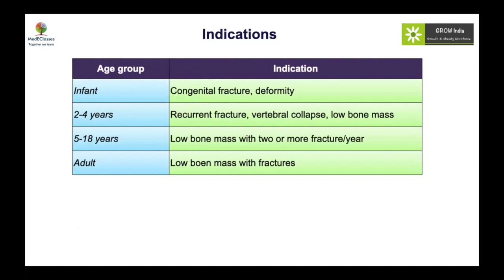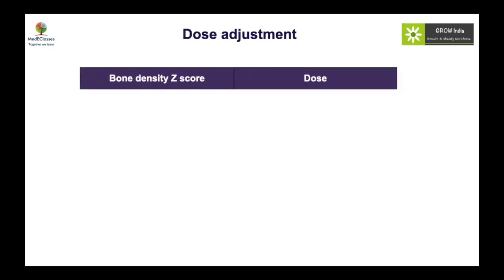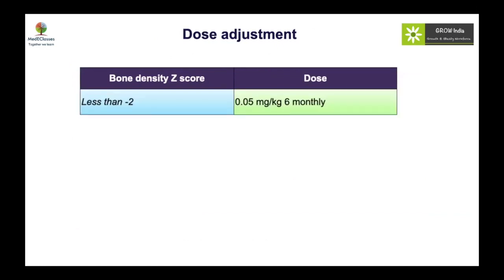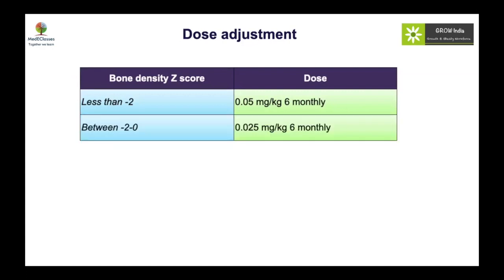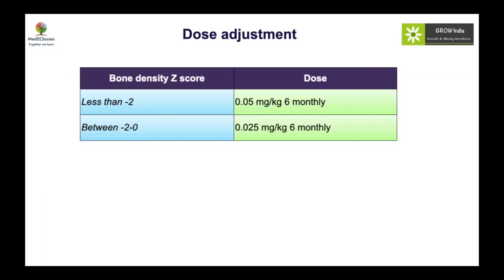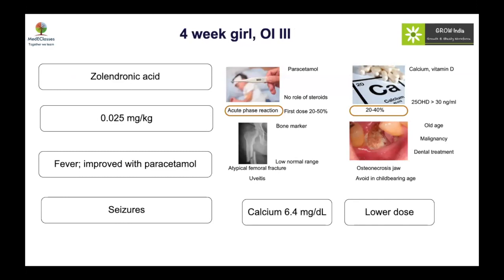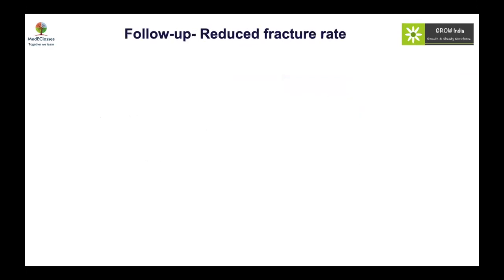Treatment indications for OI: any infant with fractures should be treated; children aged two to four years with worsening fractures or vertebral collapse should be treated; children five to eighteen years with low bone mass and fractures should be treated. Milder forms of OI may not need treatment. In adults, treatment is only required if there is low bone mass with fractures. Importantly, do not over-correct: if the BMD Z-score remains low, continue the same dose; if it improves to the normal range, halve the dose; if it rises above zero, reduce the dose to around one-eighth.